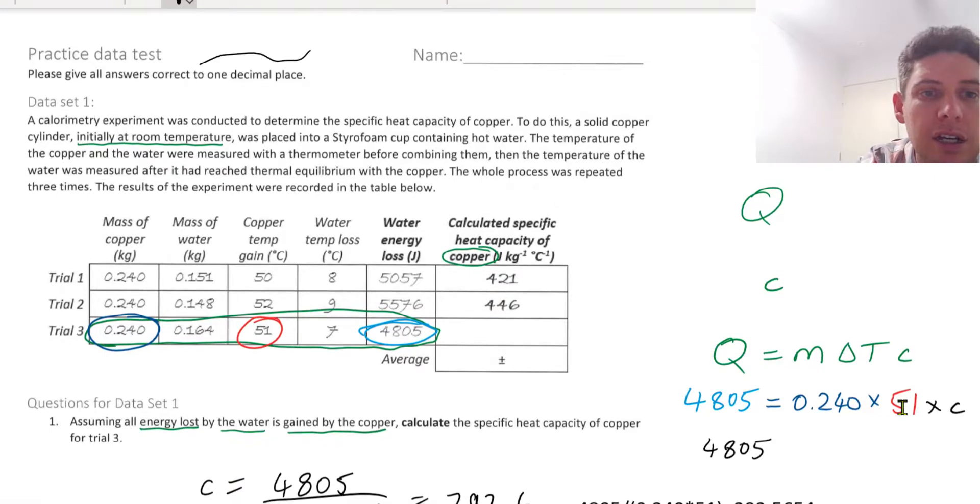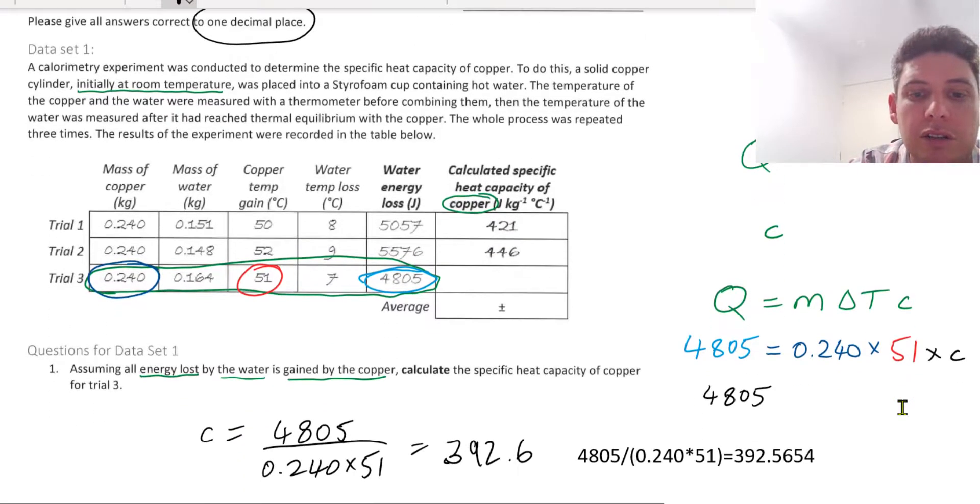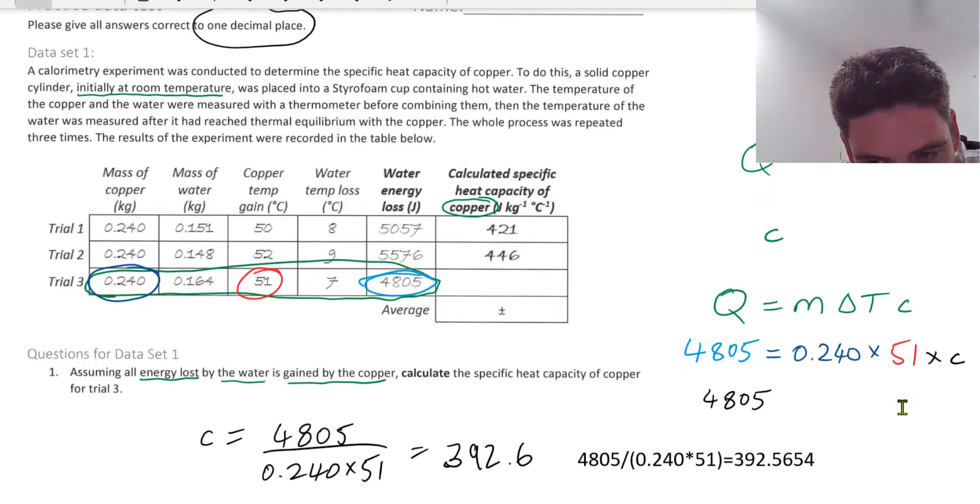So the specific heat capacity of copper for trial 3 is 392.6. Because if you have a look here, it says answers correct to one decimal place. You can see it has the units up there. It's less than the other trials because the water energy loss is less.